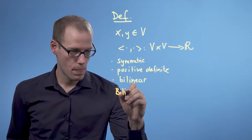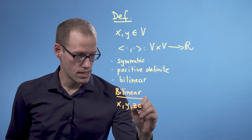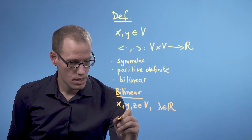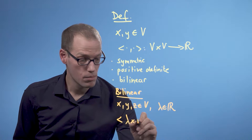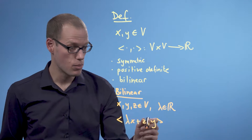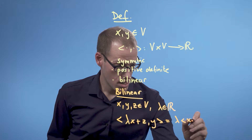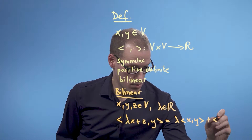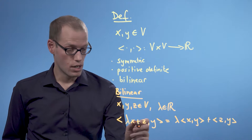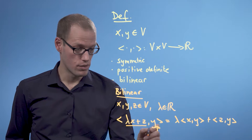Let's start with bilinearity. Bilinear means that for vectors x, y, and z in this vector space and real numbers lambda, the inner product between lambda x plus z and y can be written as lambda times the inner product between x and y, plus the inner product between z and y. This is linearity in the first argument of this function. We require linearity also for the second argument.